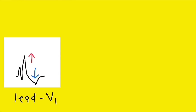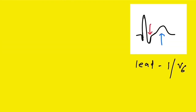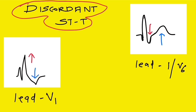In lead V1, after the RSR' pattern, the QRS complex is followed by ST depression and T inversion. The red-colored arrow indicates the direction of the QRS complex, and the blue-colored arrow indicates the direction of ST and T. It is always discordant — meaning ST and T will always be in discordance with QRS activity in right bundle branch block. In V1 and V6, the terminal QRS deflection is downward, but the ST and T changes are upward. The ST and T wave is always discordant compared to the QRS complex.